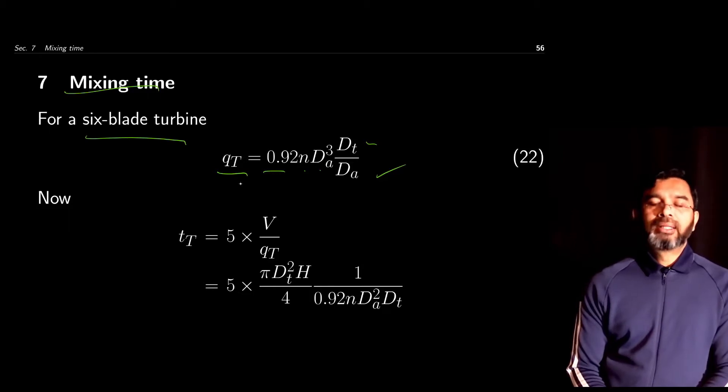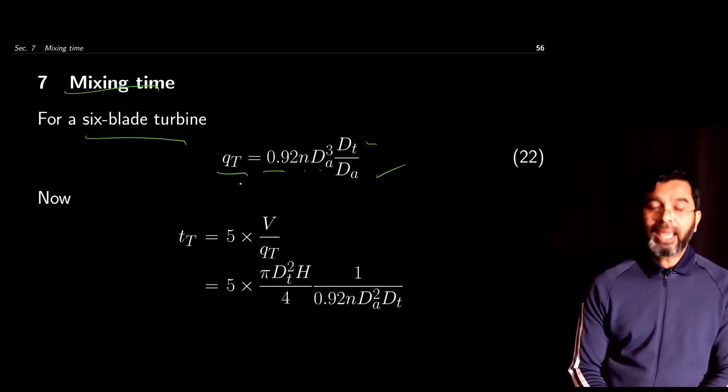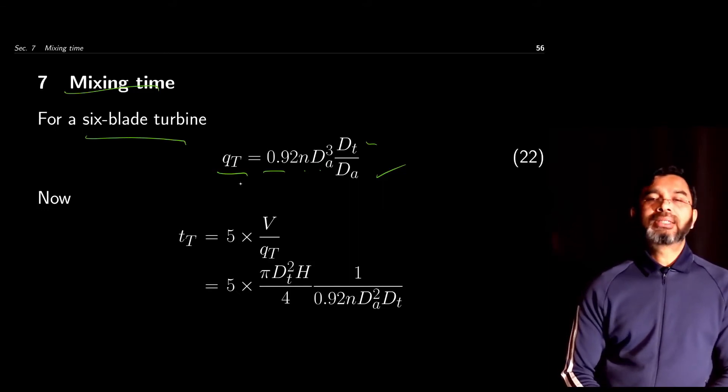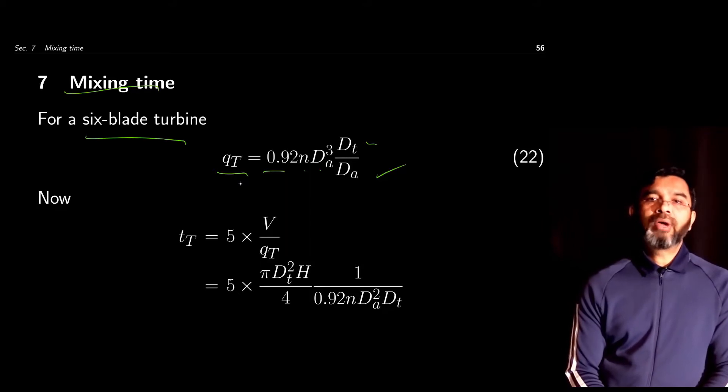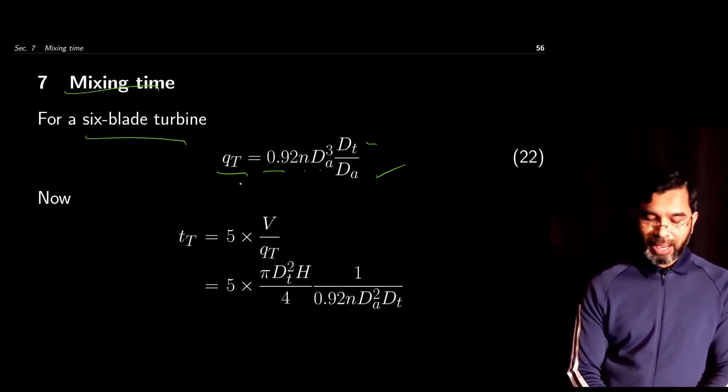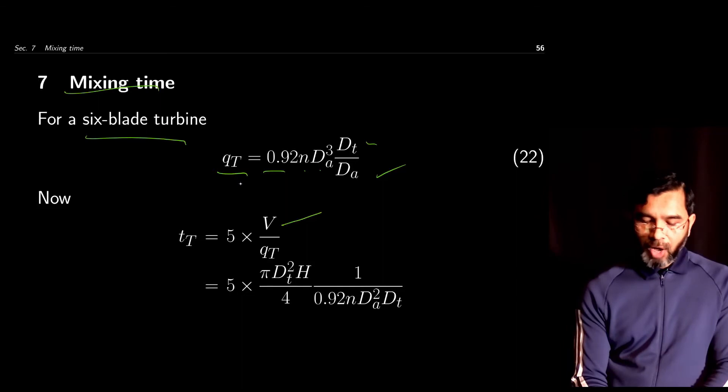The mixing time indicates that mixing has been complete when the fluid passes through the impeller five times. If the total volume of fluid in the vessel is V and the flow through the impeller is qt, then V/qt indicates the time required for the fluid to go through the impeller one time.